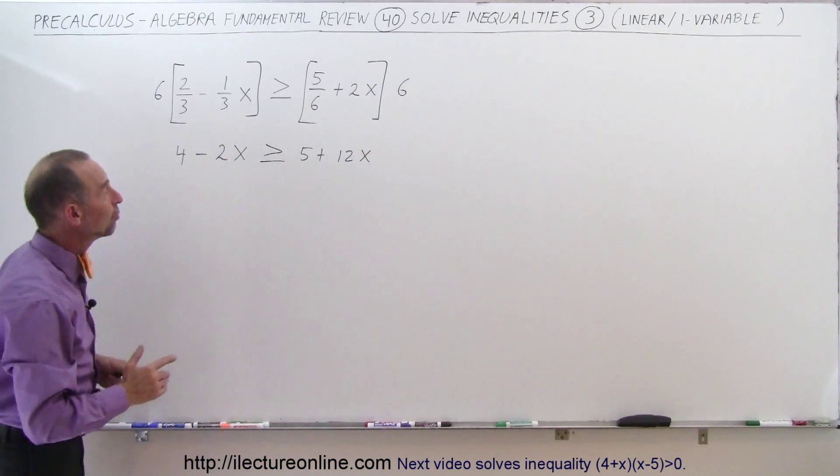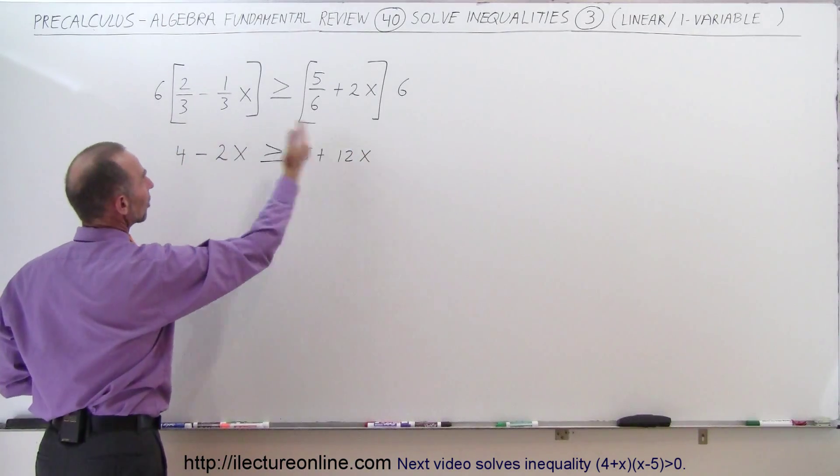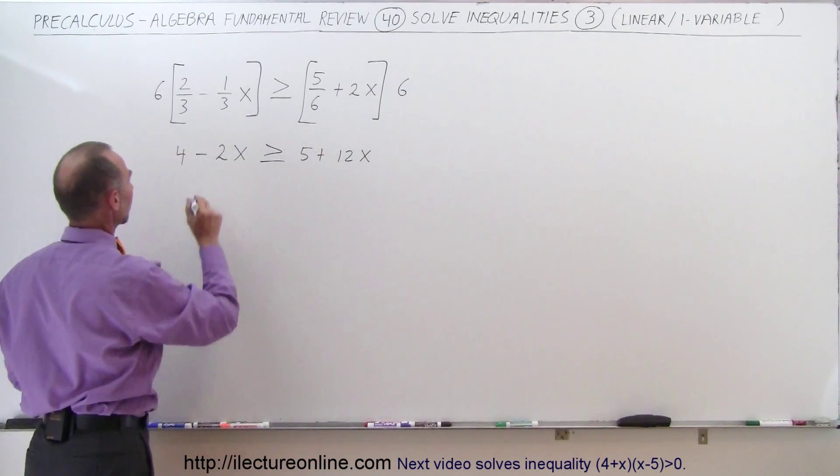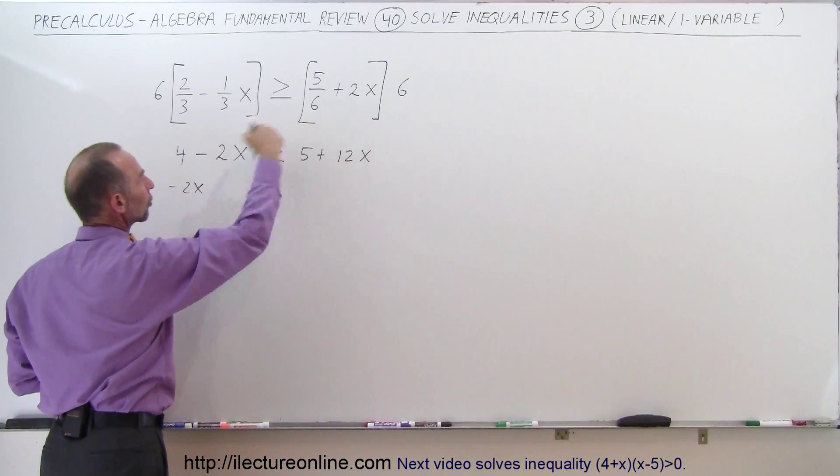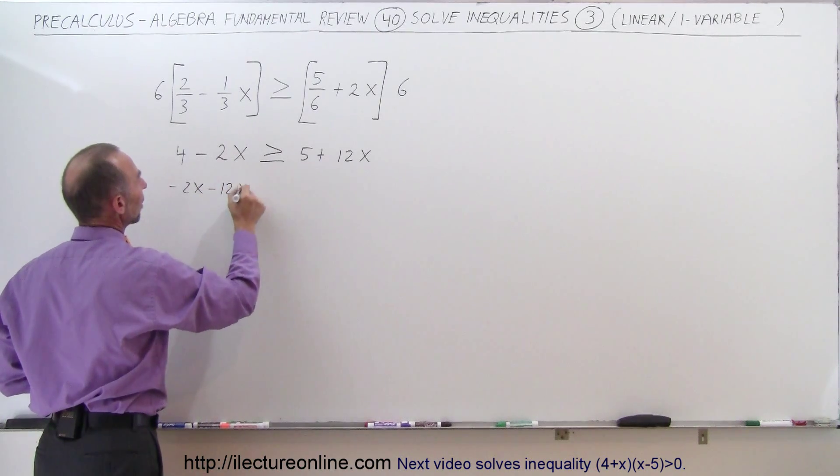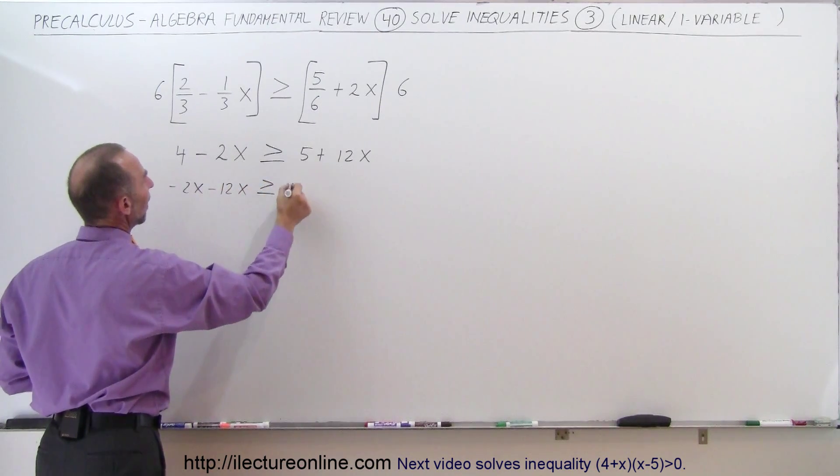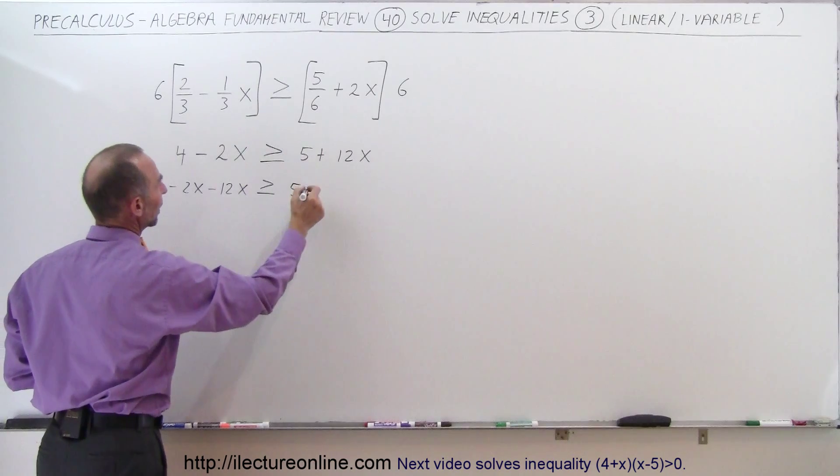Now the next thing we're going to do is move all the terms with the x to the left side, all the numbers to the right side. So here we get minus 2x, and when the 12 goes across, we get a minus 12x, greater than or equal to 5, and when we bring the 4 across the other side, we get a minus 4.